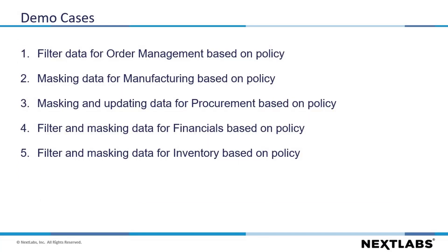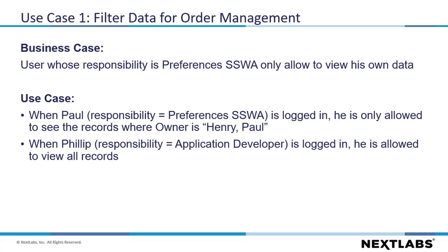Here are the five use cases we will cover in this demonstration. In the first use case, we will cover how to filter data for order management based on policy. We will show that for a user whose responsibility is Preferences SSWA, they will only be allowed to view their own data. For this use case, there will be two users, Paul and Philip.